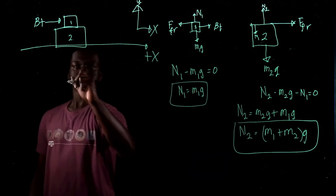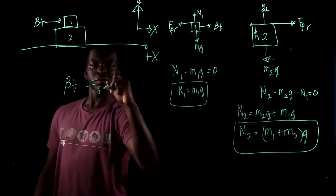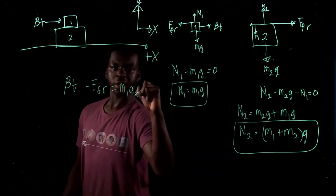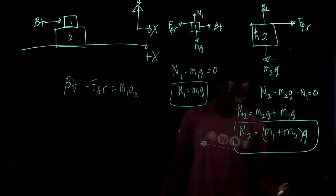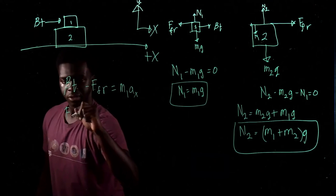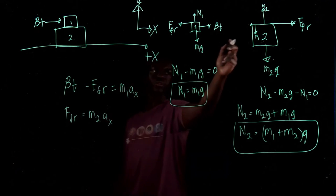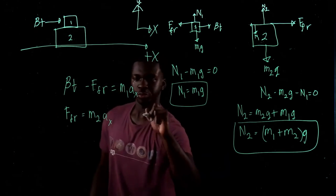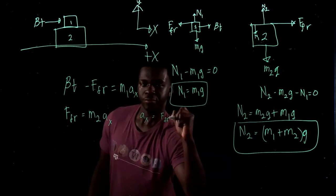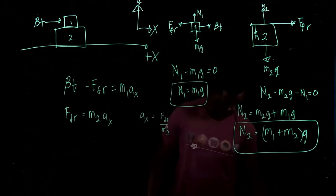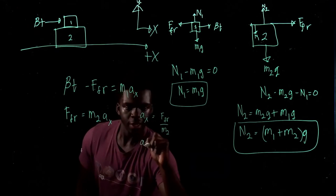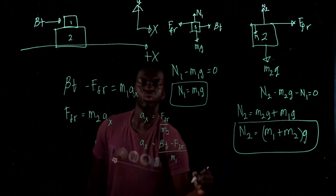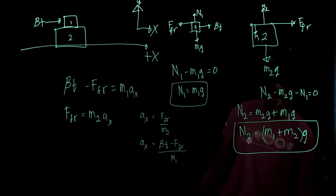Now finding the friction force is more involved. In the x direction for block one: beta T minus F_FR equals M1 Ax. For block two in x: F_FR equals M2 Ax. So Ax equals F_FR over M2 from the second equation, and Ax equals (beta T minus F_FR) over M1 from the first. Setting them equal to each other to solve for F_FR.